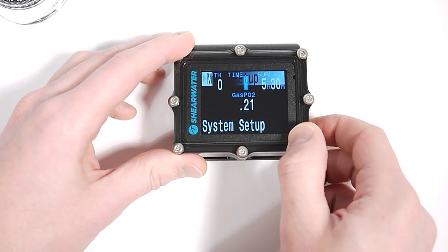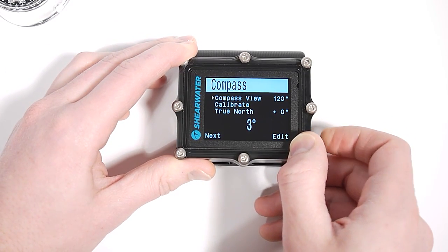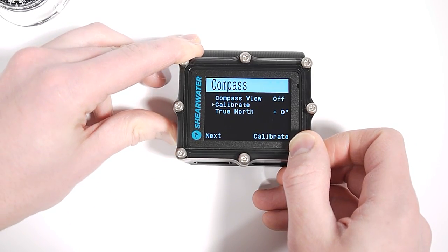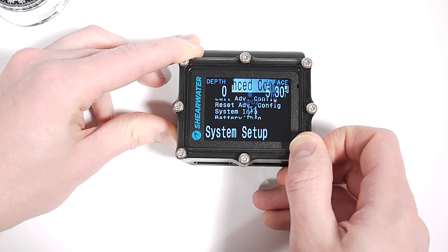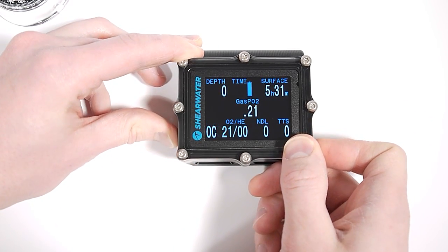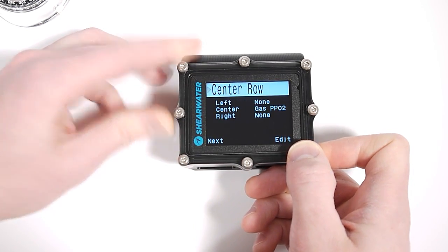So if I go into the system setup menu, there is a compass setup page. And here I can turn the compass right off. So I will do that. And now if we go back to the main screen, it's not there. And you're also not going to get that mark heading menu option. You can do that if you don't like the compass.